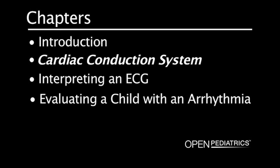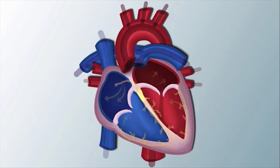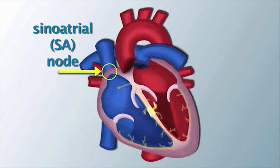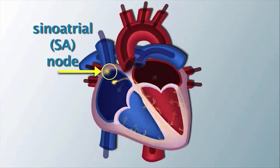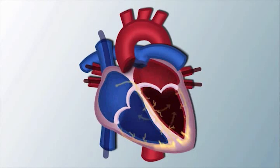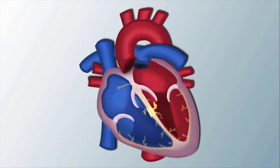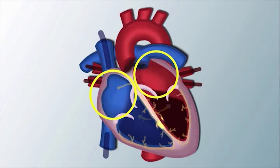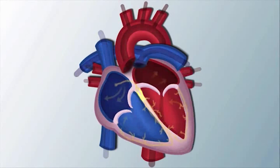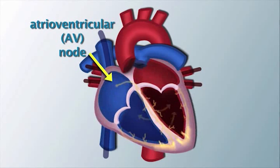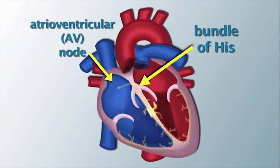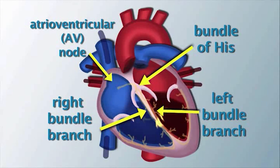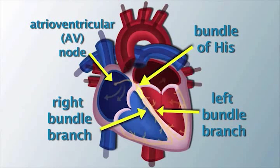Cardiac Conduction System. Electrical impulses originate in the sinoatrial node, or SA node, located at the junction of the right atrium and superior vena cava. Each electrical impulse generated from the SA node travels through the right and left atria, causing the atria to contract. The impulse then travels to the atrioventricular node, or AV node, then to the bundle of His, and finally through the right and left bundle branches of the ventricles, causing the ventricles to contract.